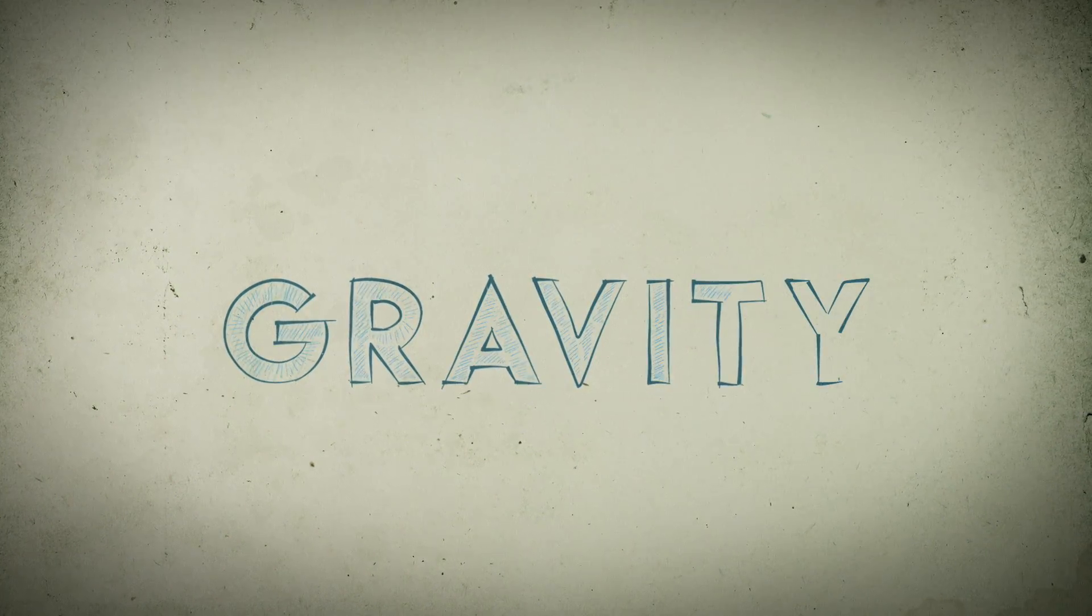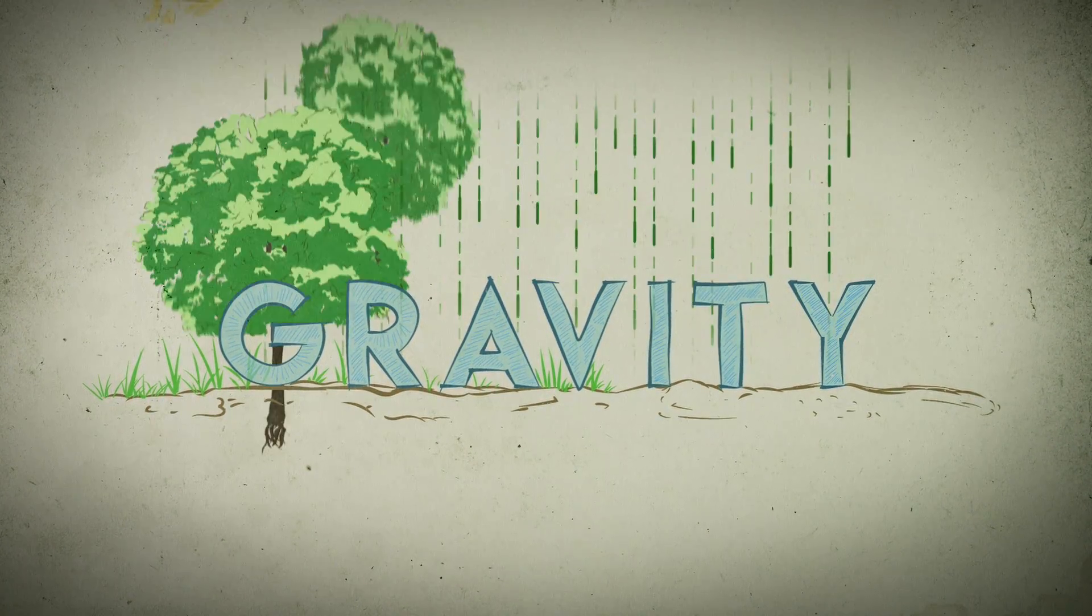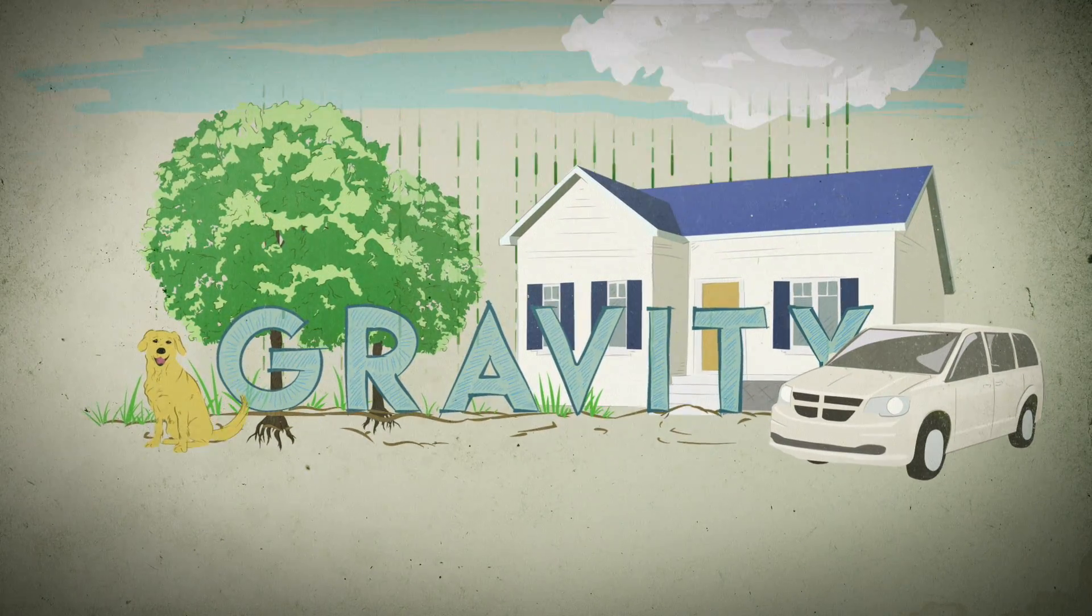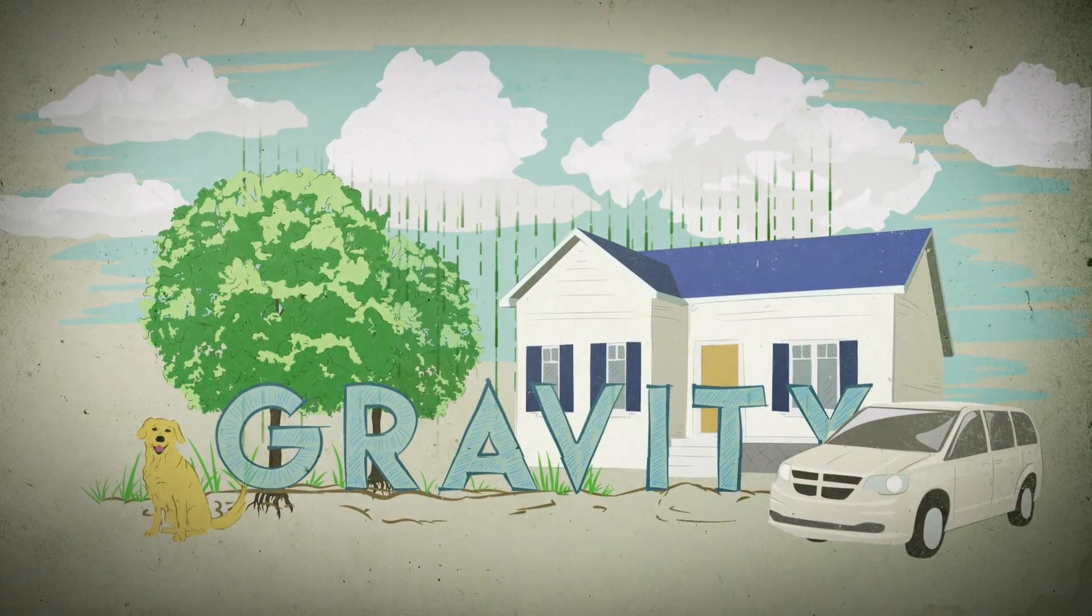To talk about how we remove something from a planet, we're going to have to talk about two forces of nature. First, the force of gravity. Gravity is the thing which is holding you down to the planet, but if you think about it, it's also what is holding the atmosphere down onto the planet as well.